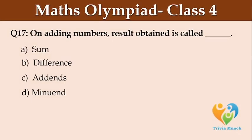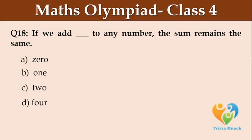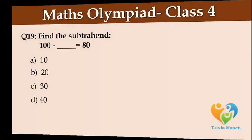On adding numbers, the result obtained is called blank. Option A: Sum. Option B: Difference. Option C: Addance. Option D: Minor. If we add blank to any number, the sum remains the same.